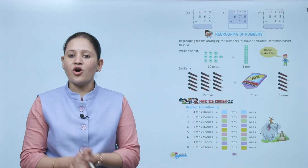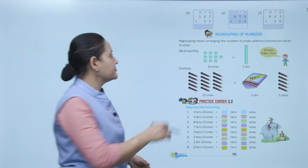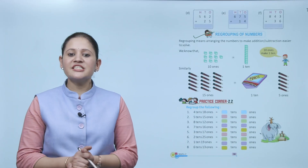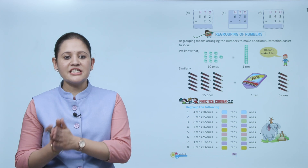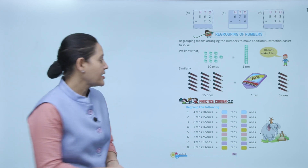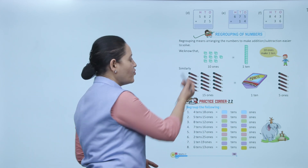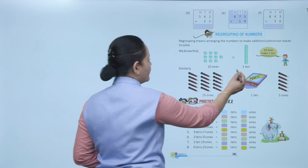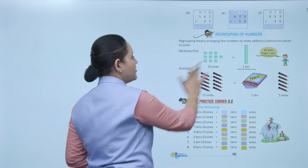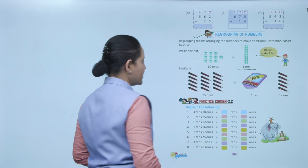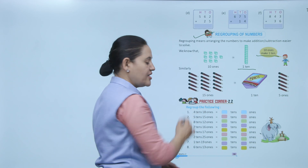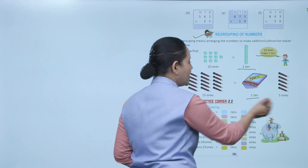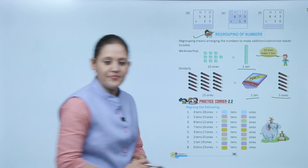Next is regrouping of numbers. Regrouping means arranging numbers to make addition and subtraction easier to solve. We know that 10 ones make 1 ten. Similarly, 15 ones means 1 ten and 5 ones.